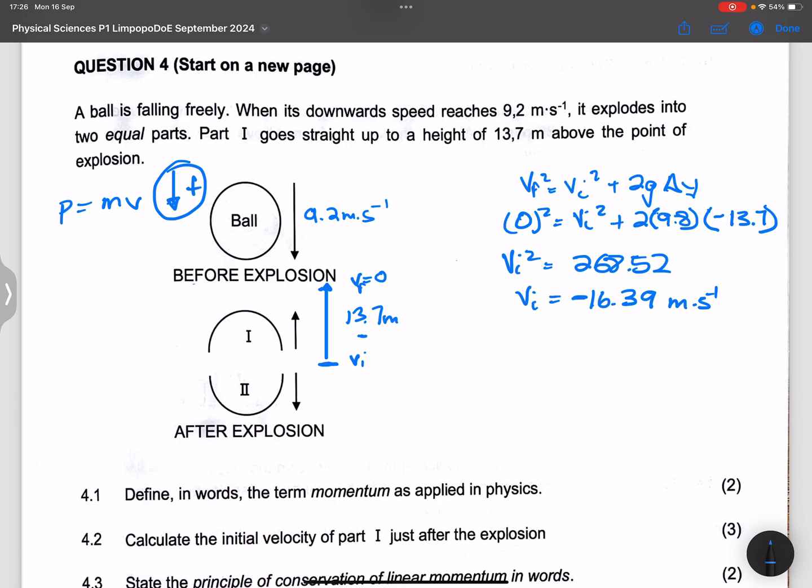So remember when the explosion took place, part one went up. We said downwards is positive, so this means that it must be negative.